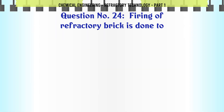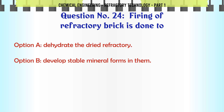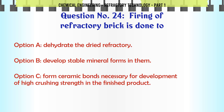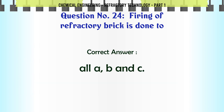Firing of refractory brick is done to: A. Dehydrate the dried refractory, B. Develop stable mineral forms in them, C. Form ceramic bonds necessary for development of high crushing strength in the finished product, D. All A, B and C. The correct answer is All A, B and C.